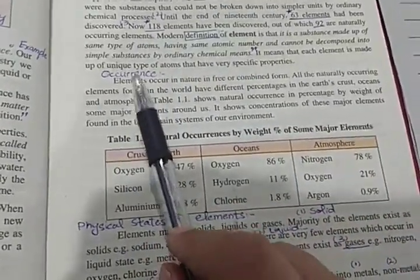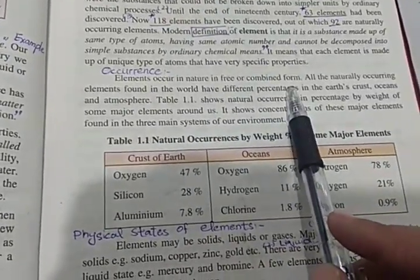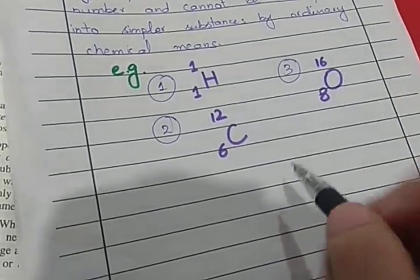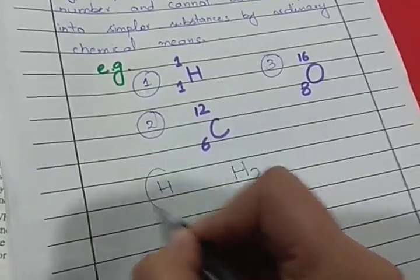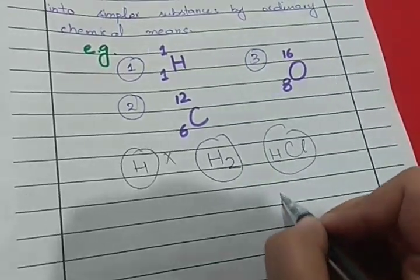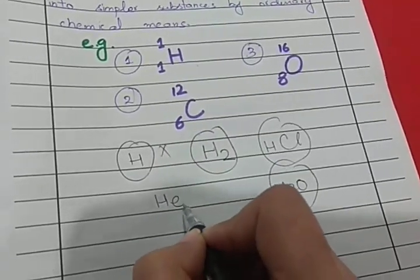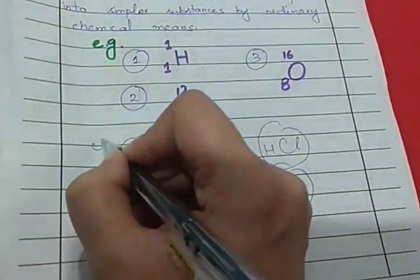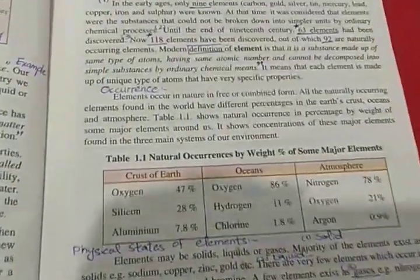Elements occur in nature in free and combined form. For example, hydrogen always exists in combined form — in H₂, HCl, or H₂O — it does not exist as a lone hydrogen atom. On the other hand, helium can exist in free form. So some elements exist freely and others in combined form.